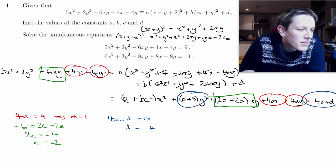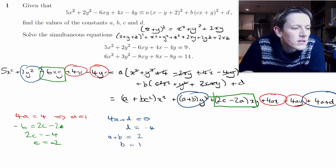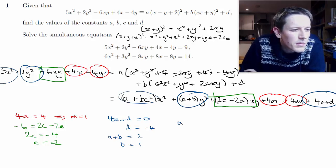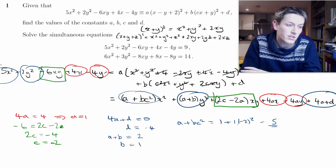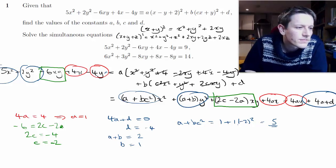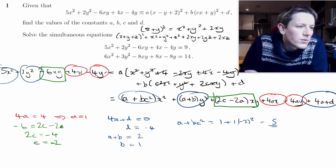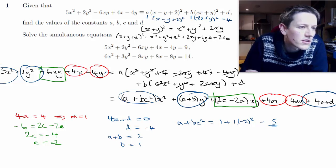For the y² term: a + b = 2, and since a = 1, we get b = 1. We should check that a + bc² gives the x² coefficient: 1 + 1 × (−2)² = 5. That checks out. Note that if you used the x² term to find c, you'd get ±2 from the square root, so you do need to use the xy term to confirm the sign. So a = 1, b = 1, c = −2, d = −4.